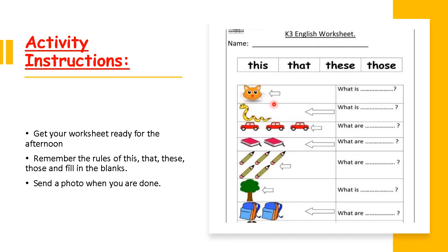If it is close, we use this. If it is far, we use that — same rule applies for these and those. For example, look at the picture: there's only one cat. Since it's one, we choose between this and that. Is it far or close? It is close, so we use this. We write in the blank: What is this?